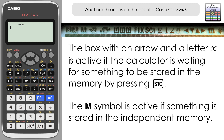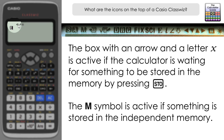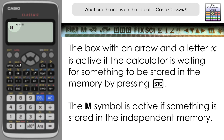If I wanted to store a number in the memory — for example 9 — if I press store, you can see it's activated that box symbol with the arrow, indicating that the calculator is waiting for me to input a letter in which to store this particular number.